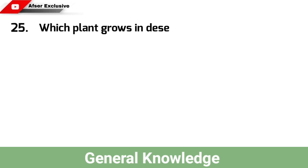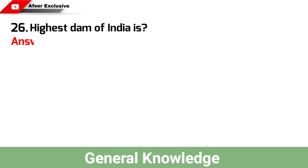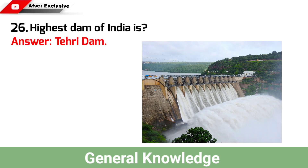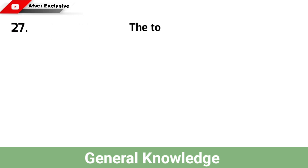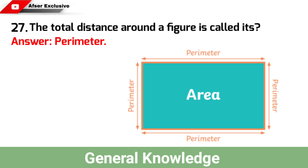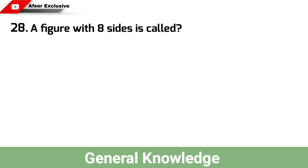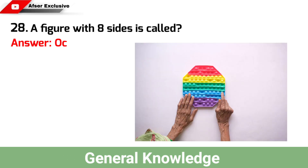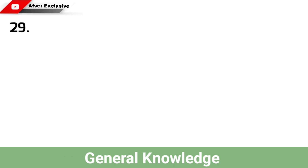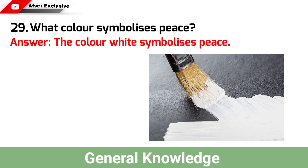Which plant grows in the desert? Answer: Cactus. Highest dam of India is? Answer: Tehri Dam. The total distance around a figure is called its? Answer: Perimeter. A figure with eight sides is called? Answer: Octagon. What colour symbolises peace? Answer: The colour white symbolises peace.